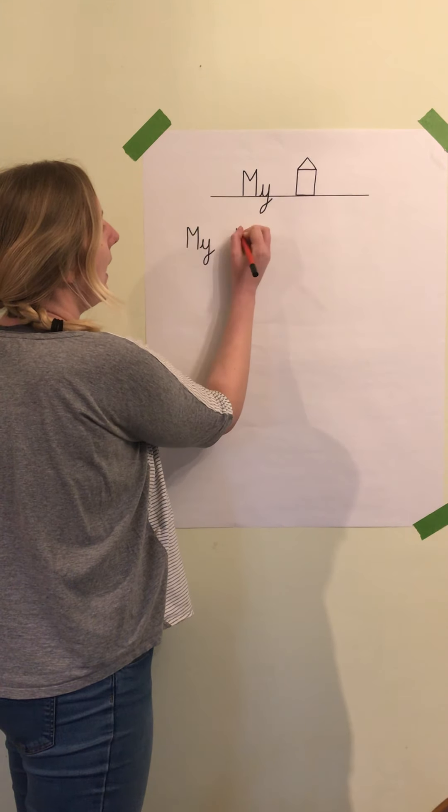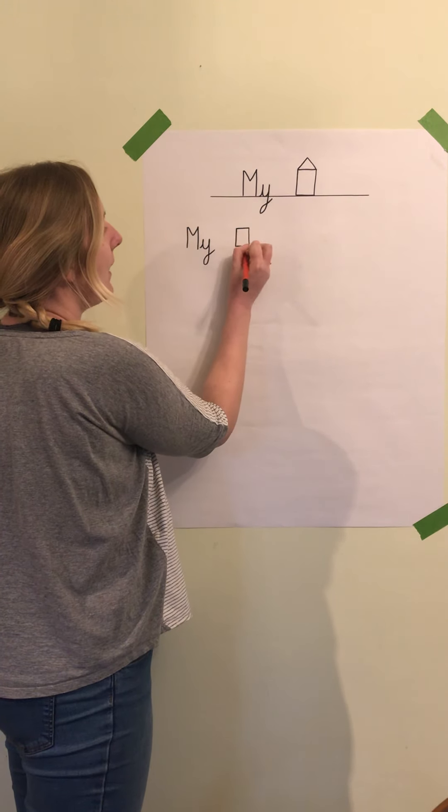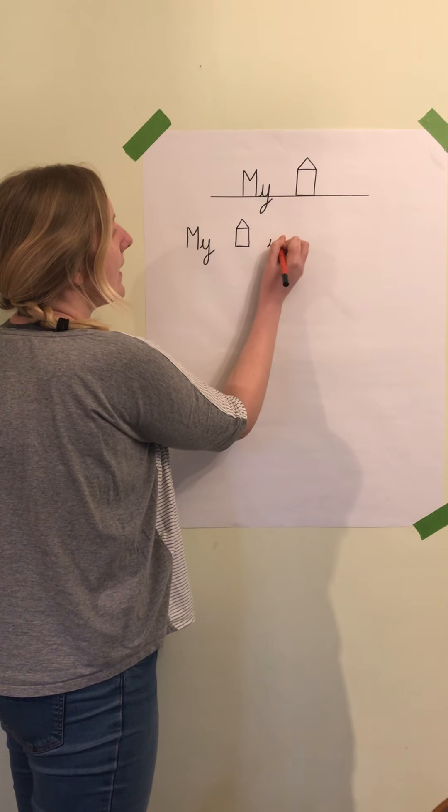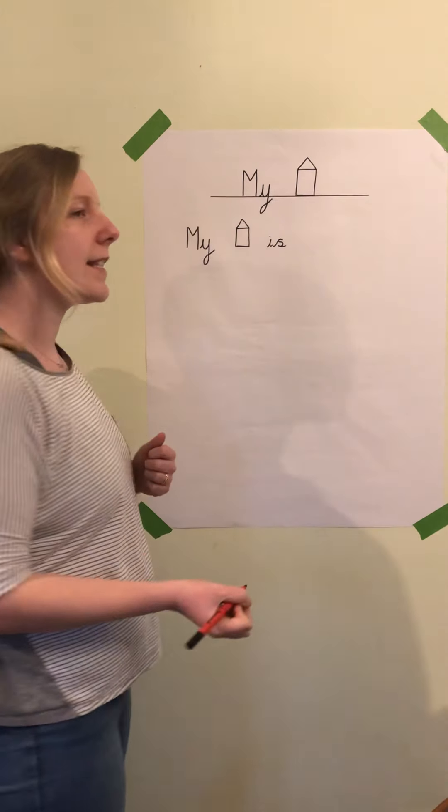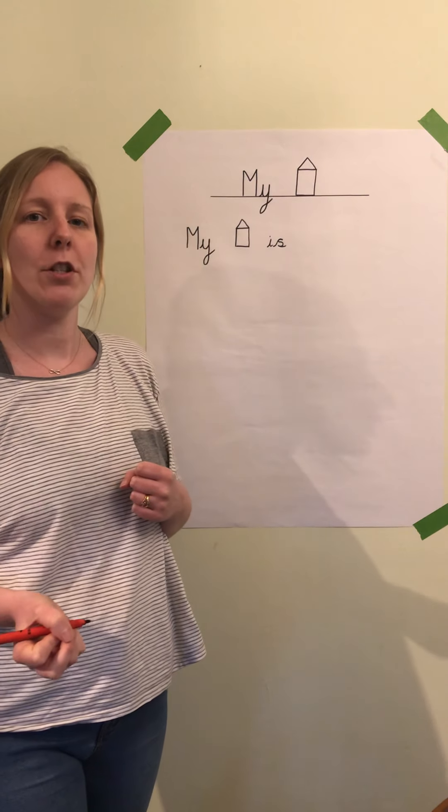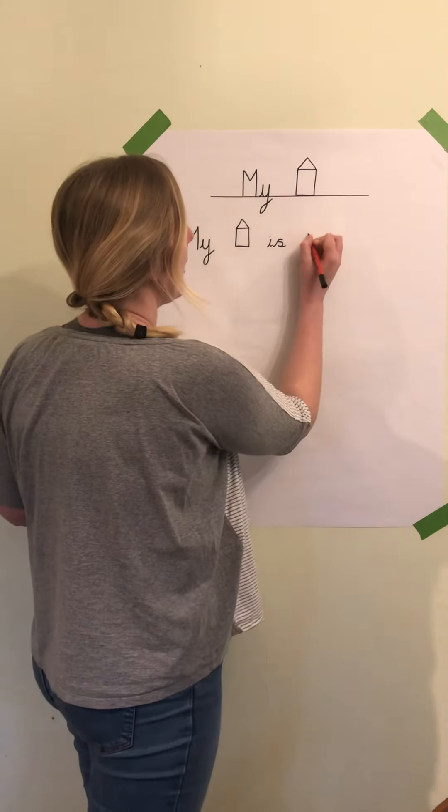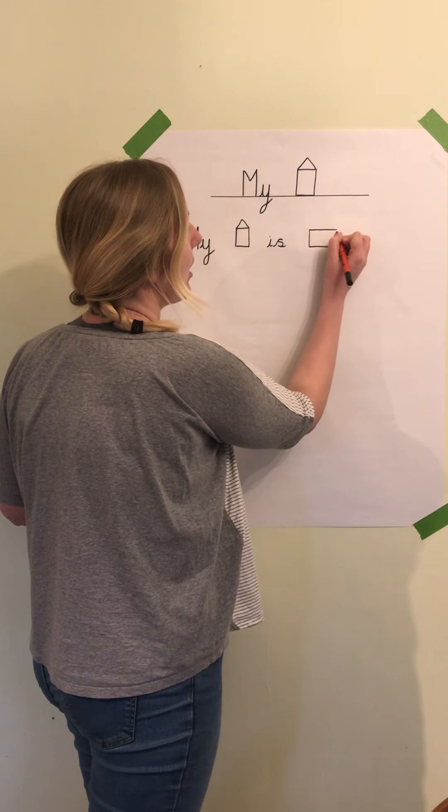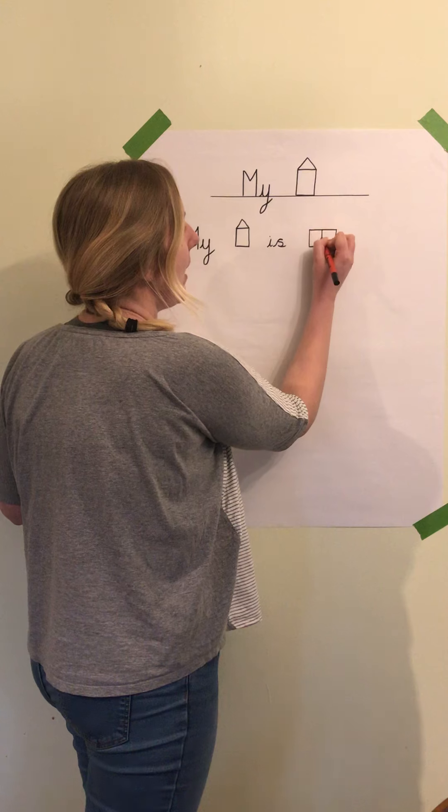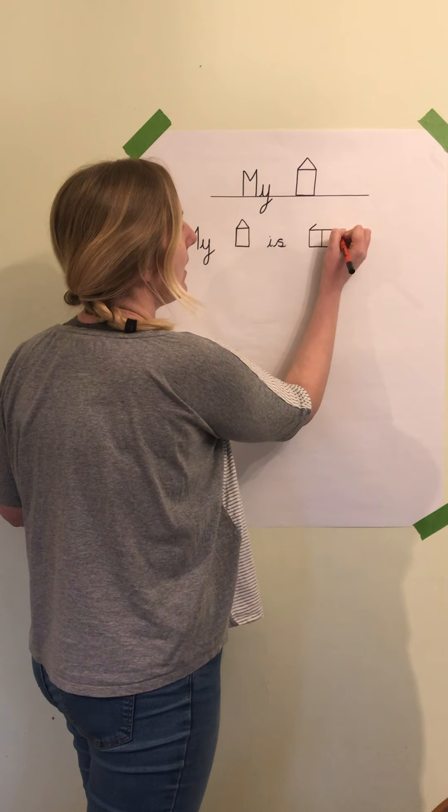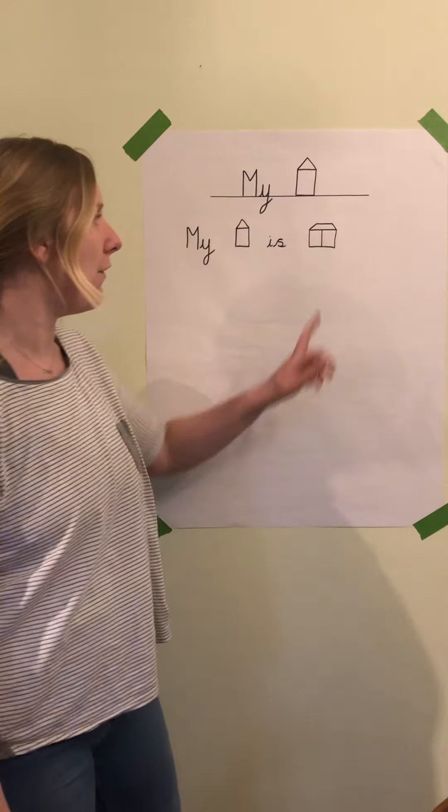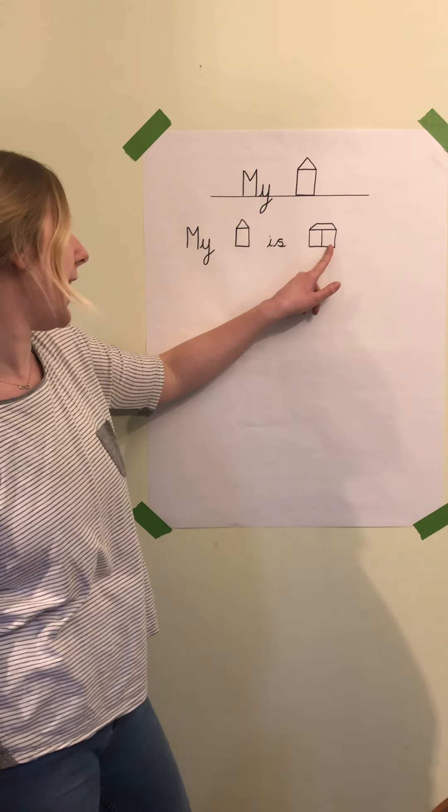My house—let's draw our little house picture again—'is,' and then semi-detached. Now I'm going to draw a little picture to show a semi-detached house. Remember, a semi-detached house is one that is joined to one other house. So this one's mine on this side, and then I'm joined to a house on the other side as well.